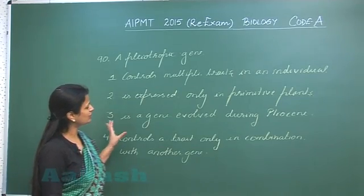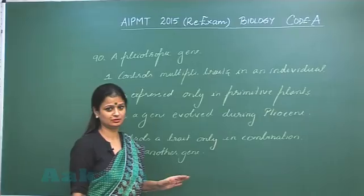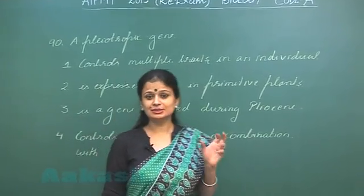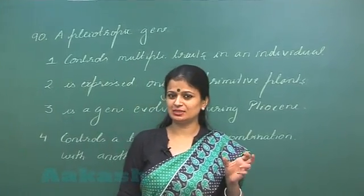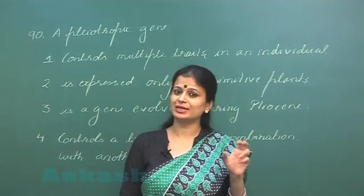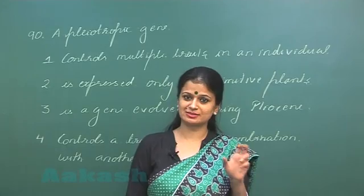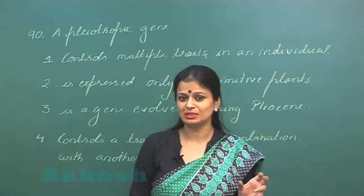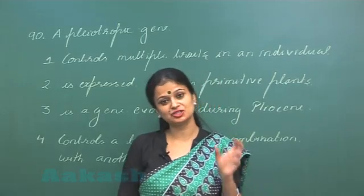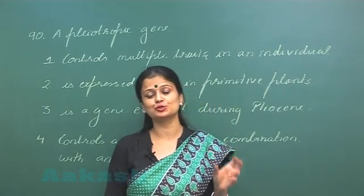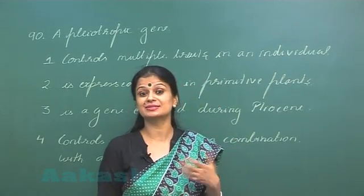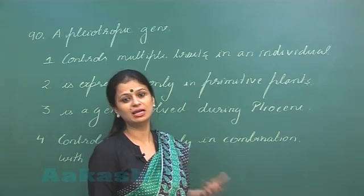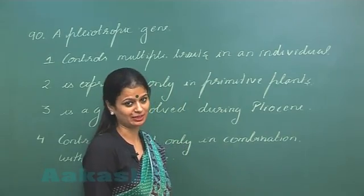Question number 90 asks about a pleiotropic gene. The term 'pleio' means more than one or several. So a pleiotropic gene is a gene which controls several or multiple traits.